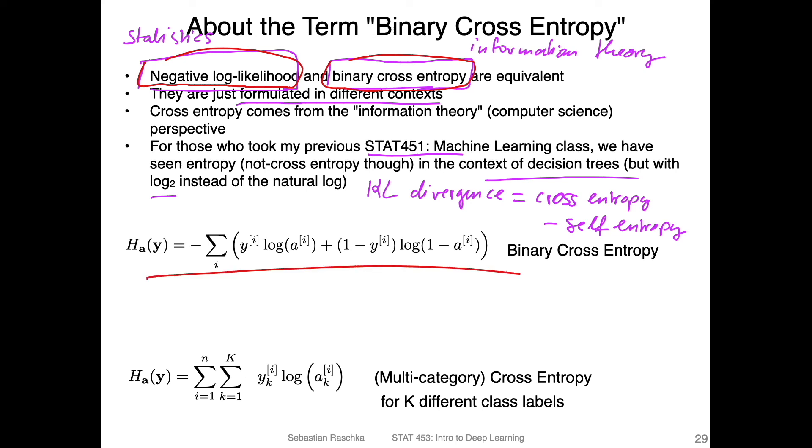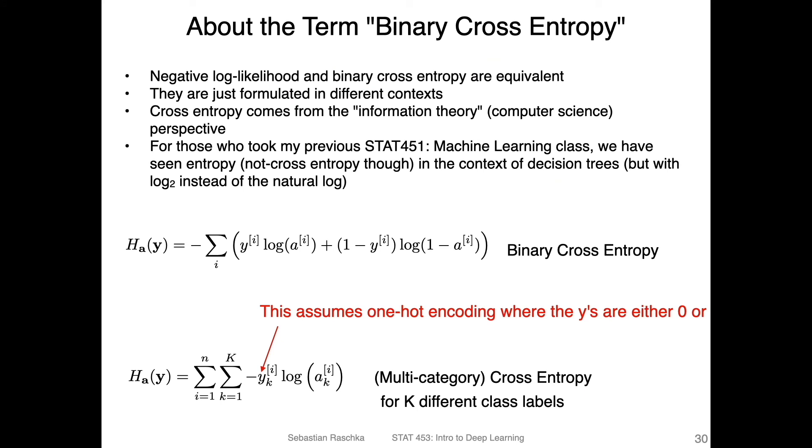This is what we've discussed in the previous videos. And there's also a multi-category version, the multi-category cross entropy, which is just a generalization of the binary cross entropy to multiple classes. In order to make that negative log-likelihood or binary cross entropy work for multiple classes, we assume a so-called one-hot encoding where the class labels are either zero or one. For some reason, it was cut off here. But this is something we of course haven't discussed yet. And if this doesn't make sense yet, we will actually discuss that after the logistic regression code example, when I will introduce the multinomial logistic regression model.